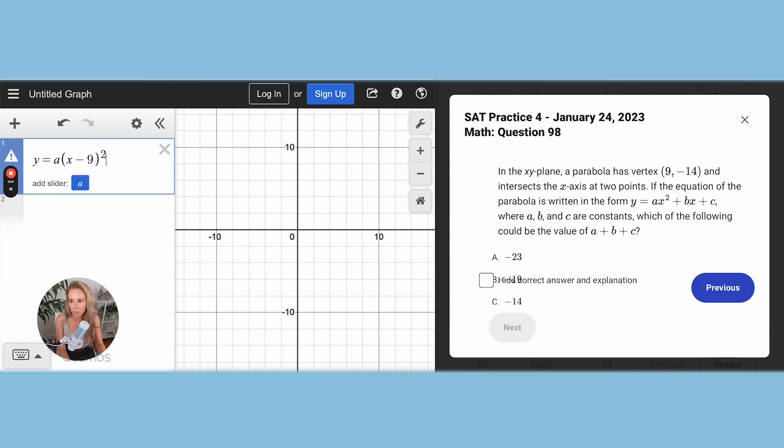Now that should be an X minus 9 because the vertex X coordinate changes the sign. So if it's a 9, then it should be a minus 9 in the parentheses. And the Y coordinate stays the same at negative 14.